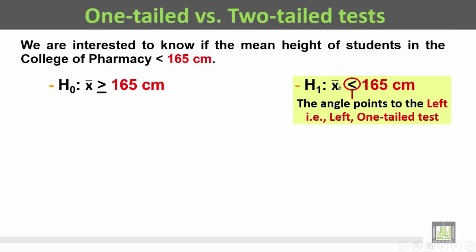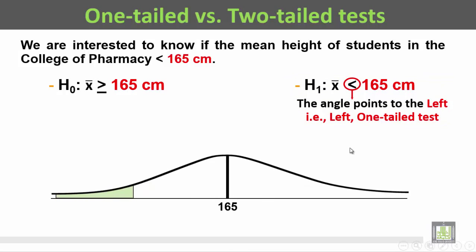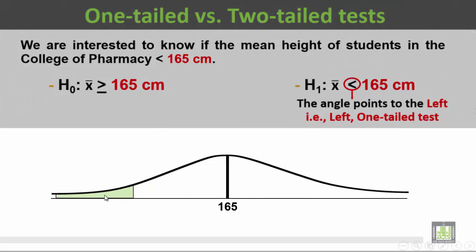From the alternate hypothesis H1, we have the less-than sign — the angle is pointing to the left side. Since the angle points to the left, this is a left one-tailed test. Looking at the normal distribution curve, the rejection region will be to the left tail, which contains the lower values.